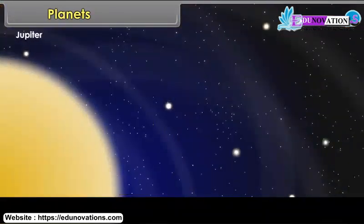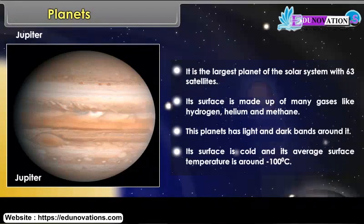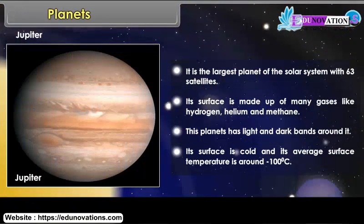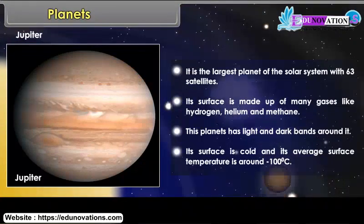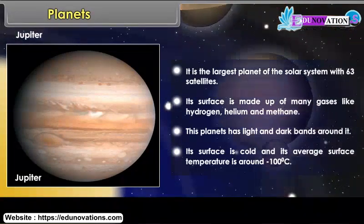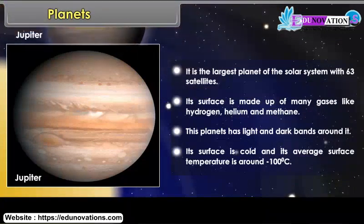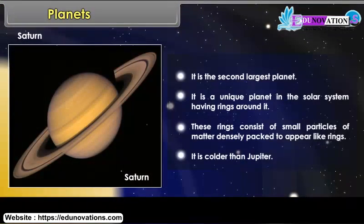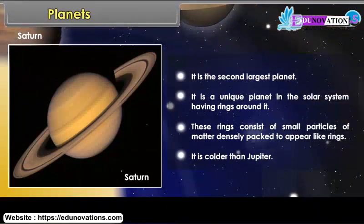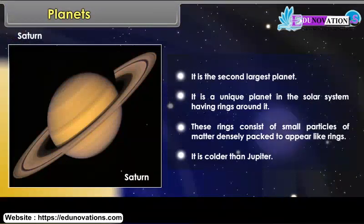Jupiter's surface is made up of many gases like hydrogen, helium and methane. This planet has light and dark bands around it, and its average surface temperature is around minus 100 degrees Celsius. Saturn is the second largest planet and is unique in the solar system for having rings around it. These rings consist of small particles of matter densely packed to appear like rings, and Saturn is colder than Jupiter.